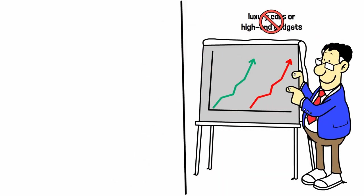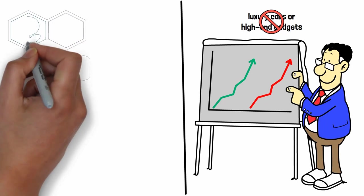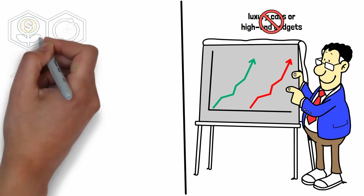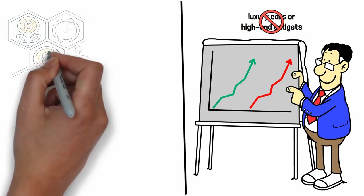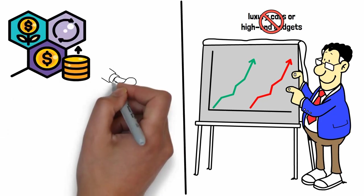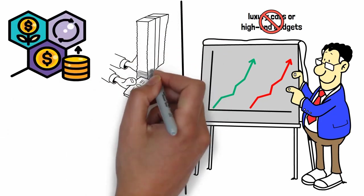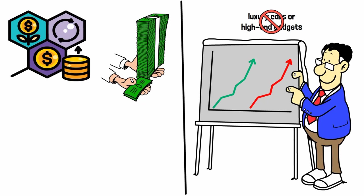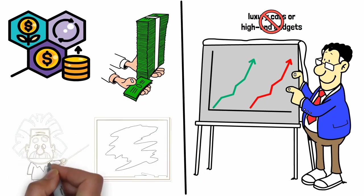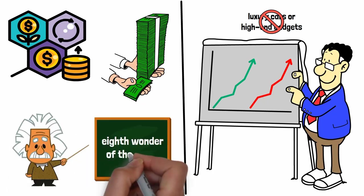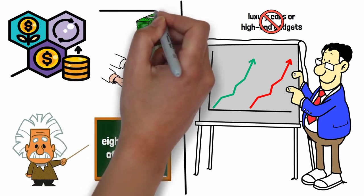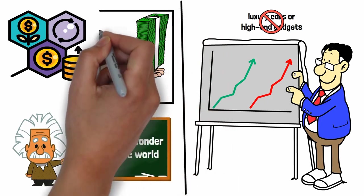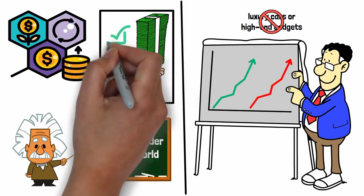Finally, understanding the power of compounding interest is crucial. Compound interest is the process where the interest on your investment earns interest itself. Over time, this snowball effect can lead to significant wealth growth. Albert Einstein famously referred to compound interest as the eighth wonder of the world. By consistently investing and reinvesting the returns, even modest sums can grow into substantial amounts.